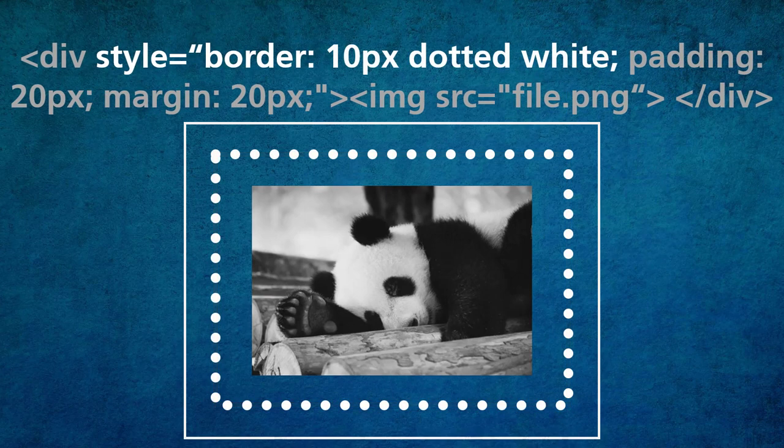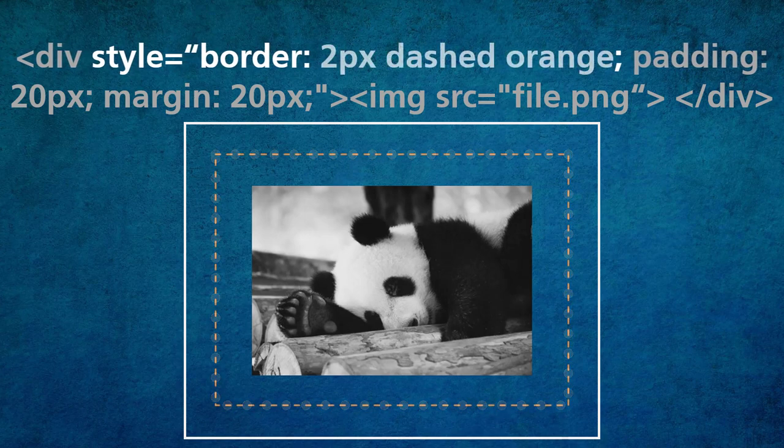I'm going to change that up — now instead of five pixels, I have a border that's 10 pixels, dotted, and white. Let's change that up one more time just for the sake of example. Here's a border that's two pixels, dashed, and orange. On Canvas you would actually see that border, and you would see if there's space between the border and the element — the text, the picture, whatever it is — and also if there's space between the border and the other content.